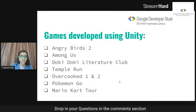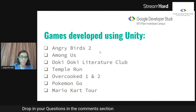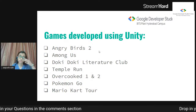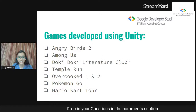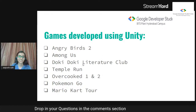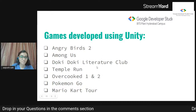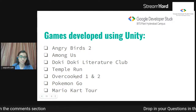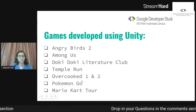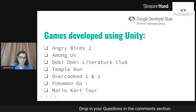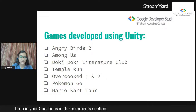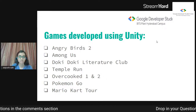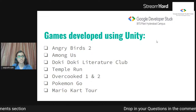These are a list of games developed in Unity: Angry Birds 2, Among Us, Doki Doki Literature Club, Temple Run, Overcooked both versions, Pokémon GO, and Mario Kart. Pokémon GO is a simulation game, Among Us is a mobile game — this just shows how good Unity is for cross-platform development.